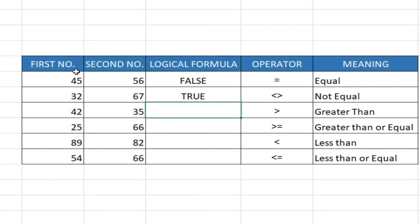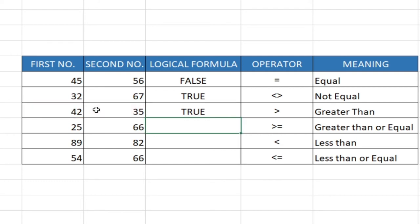Let's try greater than. We want to see if the first number is greater than the second number. Bring equals sign, select the first number, bring greater than, then select the second number, and hit Enter. It's saying true, meaning 42 is greater than 35, as expected.